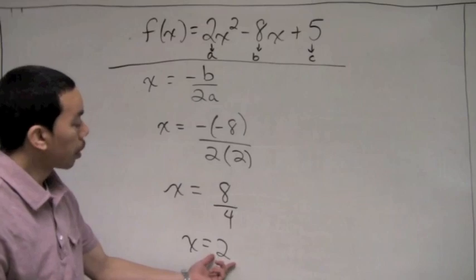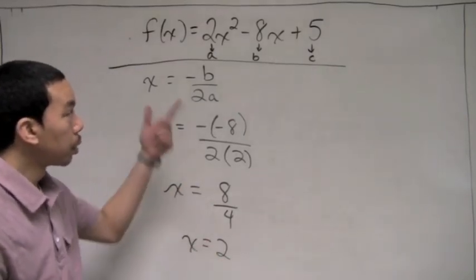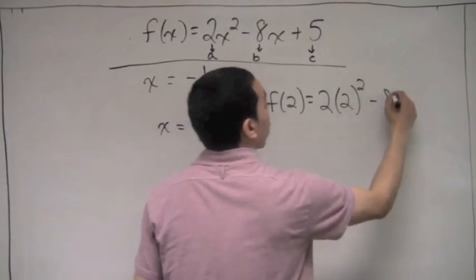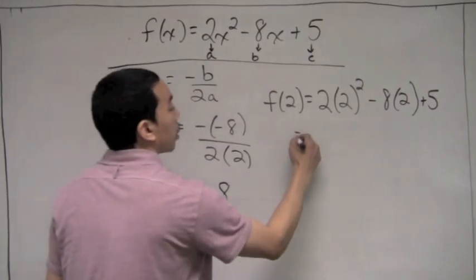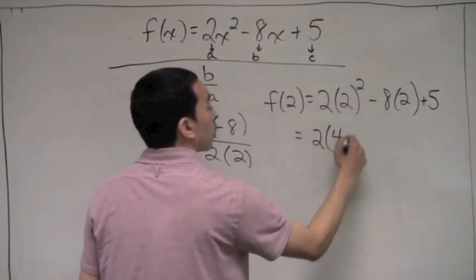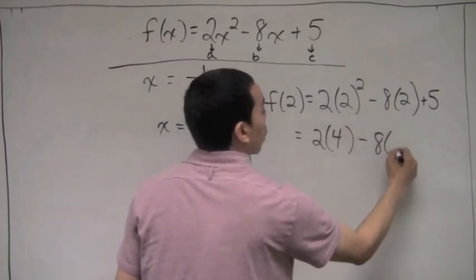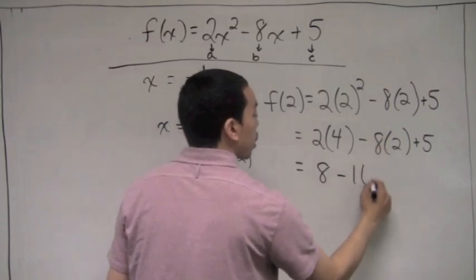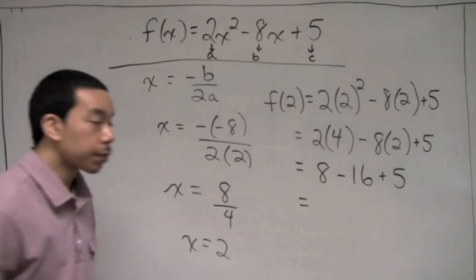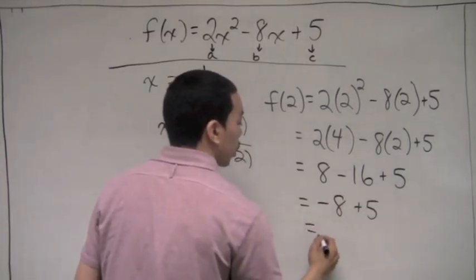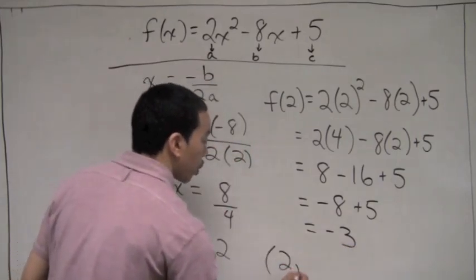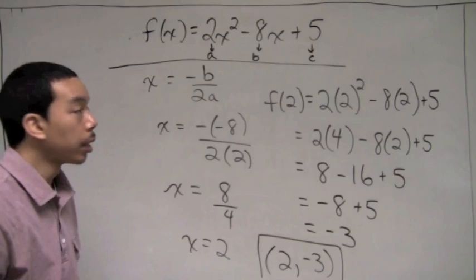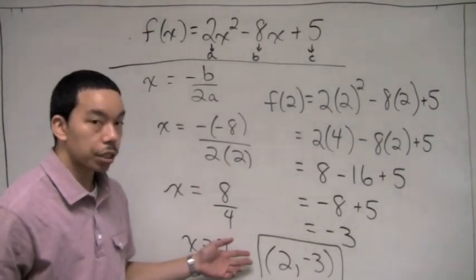Next, we take f of 2. So f of 2 equals 2 times 2 squared minus 8 times 2 plus 5. That gives us 2 times 4 minus 8 times 2 plus 5, which is 8 minus 16 plus 5. Positive 8 and negative 16 make negative 8, plus 5 gives us negative 3. So our vertex is (2, negative 3) for the quadratic function f of x equals 2x squared minus 8x plus 5.